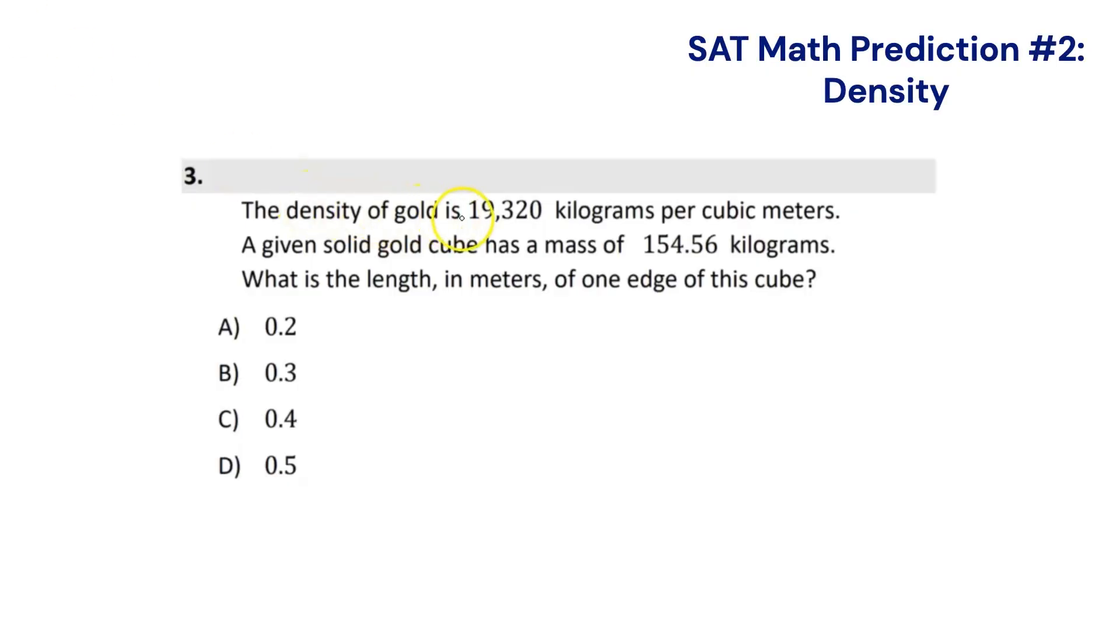It says the density of gold is 19,320 kilograms per cubic meters. A given solid gold cube has a mass of 154.56 kilograms. What is the length in meters of one edge of this cube? Okay, so this is quite a tough problem. I feel like if you've taken AP chemistry, for those of you who've dealt with rate laws and those unit conversions and dimensional analysis, this one's probably a piece of cake. But let's solve this one.